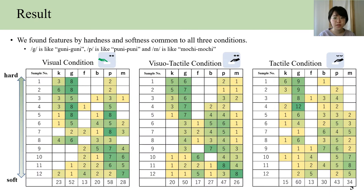We have found that many phonemes vary with hardness in all three conditions. For example, in hard samples, the first consonant is often G. In intermediate hardness to soft samples, P is often used. And in soft samples, M is used.